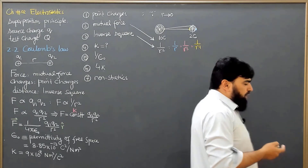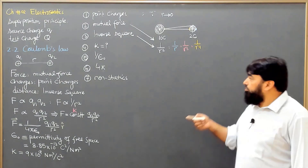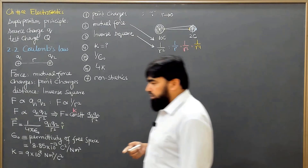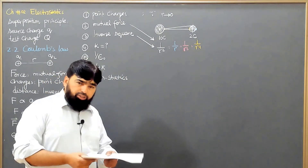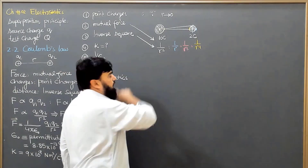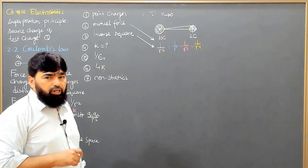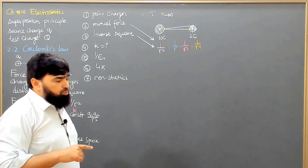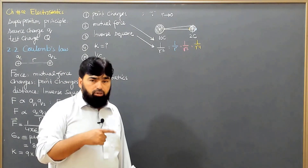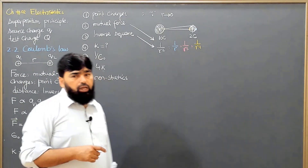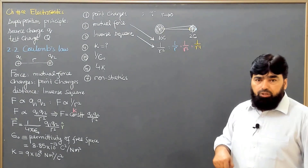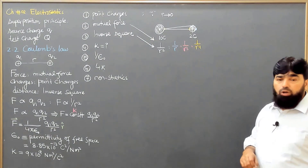If we have cylindrical geometry, the field will be different. And when we consider an infinite sheet of charges — a surface charge where charges are on a surface — then there is no dependence on r at all. This is why the inverse square law does not always hold. It depends on the geometry, the number of charges, and how they are arranged. For this specific geometry of point charges, we have the 1 over r squared relationship.